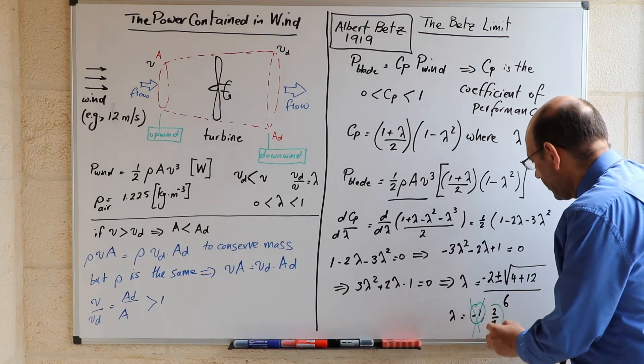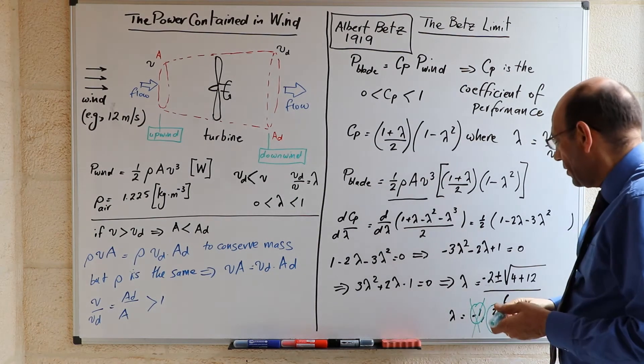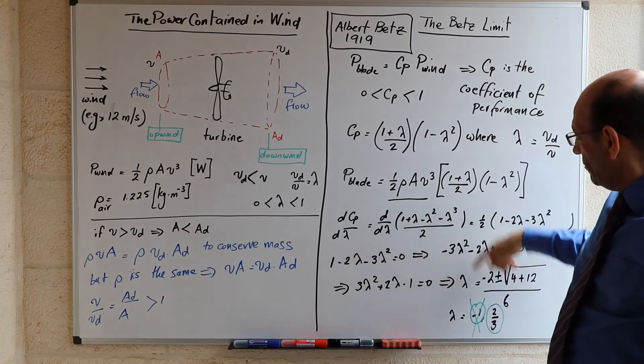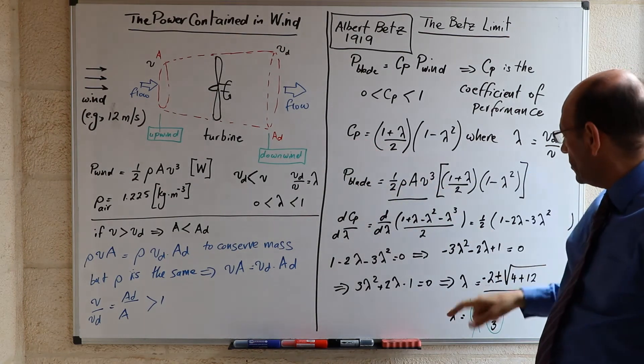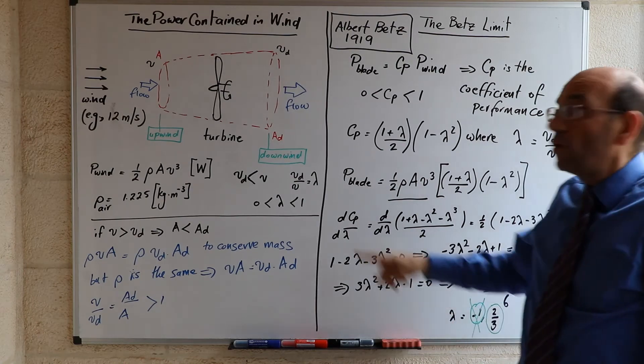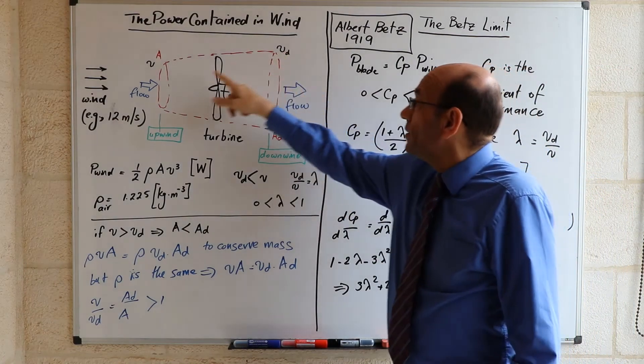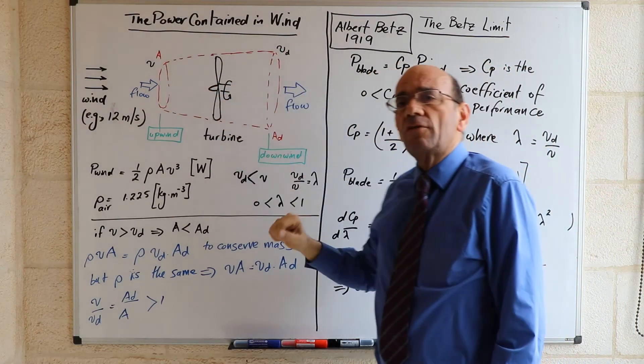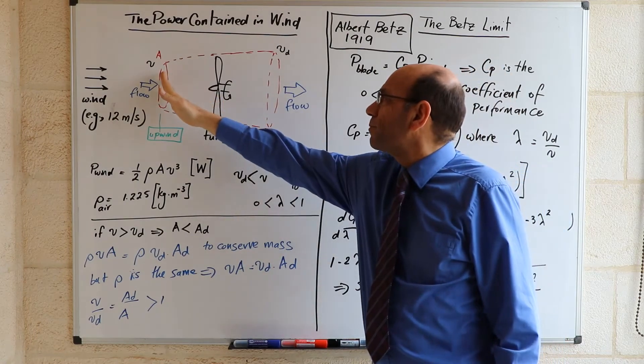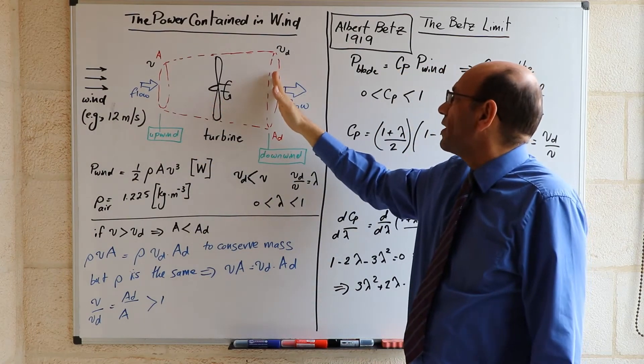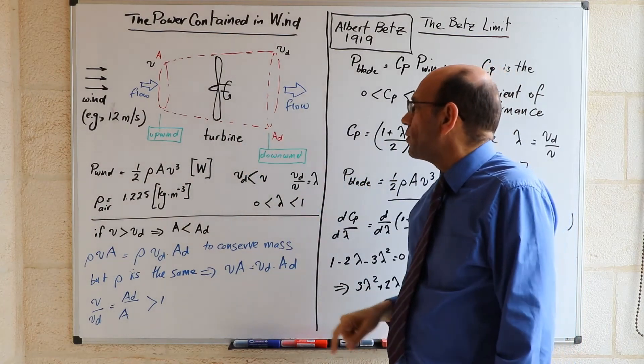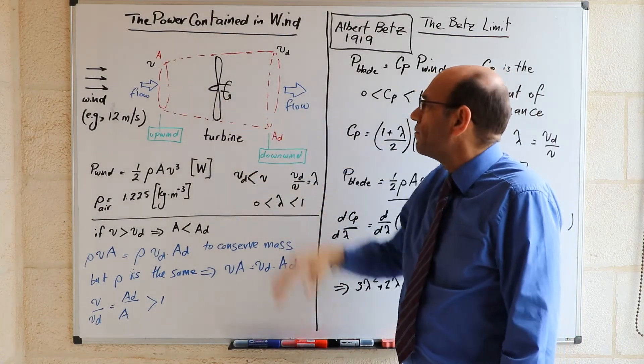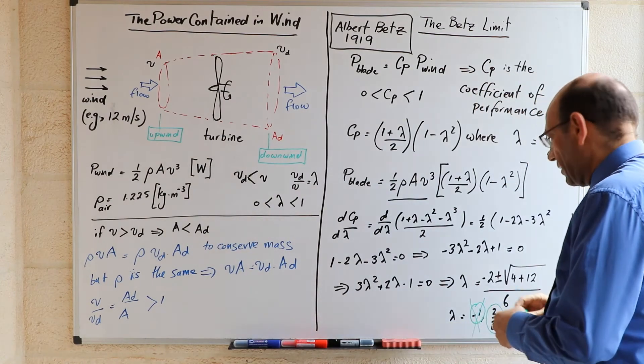So we end up with the value of two-thirds, which means that the maximum value, the maximum coefficient of performance takes place when vd is two-thirds of v. When the wind drops from this point to two-thirds of its value downwind, that is actually when the maximum possible extraction of power of the wind takes place by the plate.